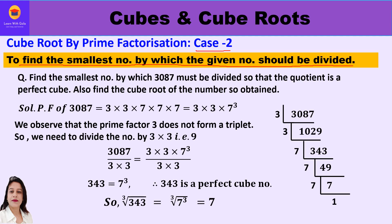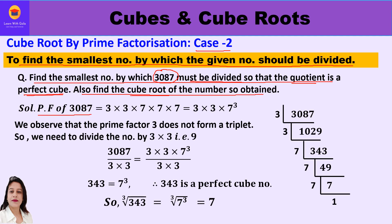Now let us study case 2: finding the smallest number by which a given number should be divided to make it a perfect cube. The question is: find the smallest number by which 3087 must be divided so that the quotient is a perfect cube, and also find the cube root of the number so obtained. I start by finding the prime factors of 3087 by prime factorization, getting 3 × 3 and 7 × 7 × 7. Clearly 7 forms a triplet, but 3 is in a pair — we are short of one factor.